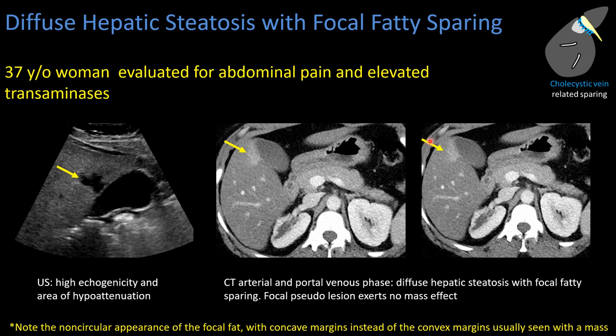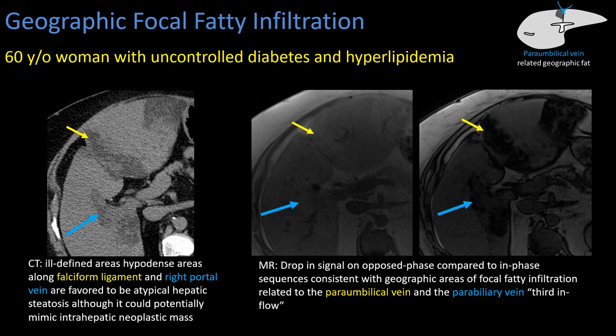This is a patient with uncontrolled diabetes and hyperlipidemia who presented for CT. We see multiple geographic areas of low attenuation — one near the gallbladder fossa, one anterior to the right portal vein, and one along the falciform ligament in a more atypical location in segment two. On opposed-phase MRI imaging compared to in-phase imaging, these areas demonstrate signal loss, consistent with focal fat deposition likely related to periumbilical and peribiliary venous drainage, or third inflow, in this patient with hyperlipidemia and diabetes.